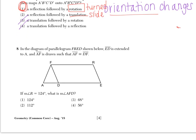Number 8 says, in the diagram of parallelogram FRED shown below, ED is extended to A, and AF is drawn such that AF is congruent to DF. If measure of angle R is 124, what is the measure of angle AFD? So A to F to D, I'm going to label that as an X. I want to know what X is.